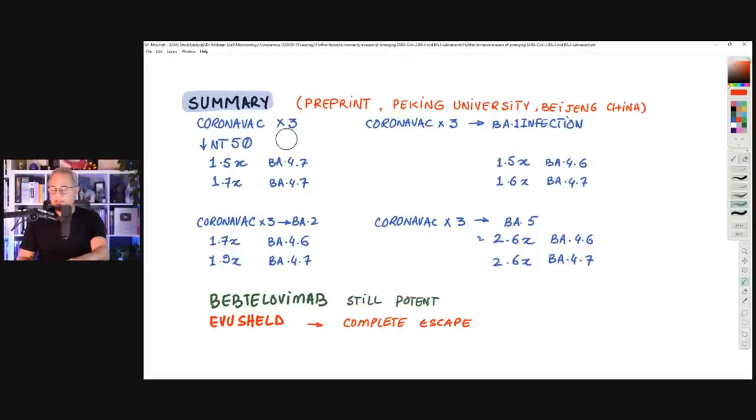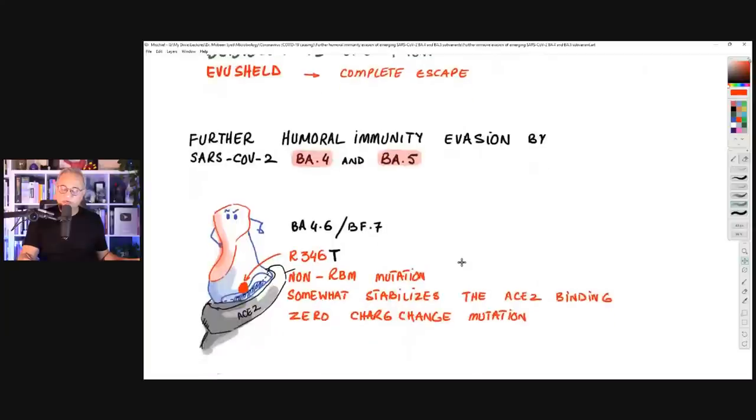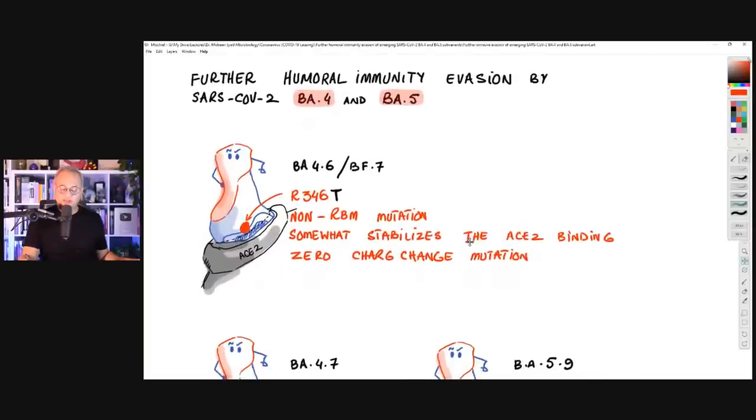So this is the summary. Vaccine and vaccine plus breakthrough infections, especially BA.5, are really not protective for BA.4.6, not BA.4 but the subvariants. But Beptilovimab is still potent. Evusheld has become useless.